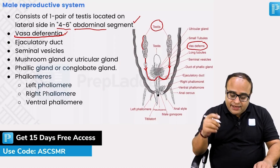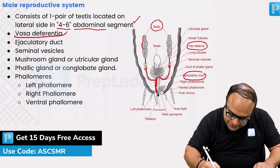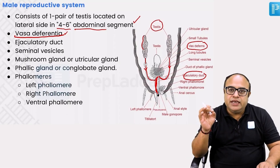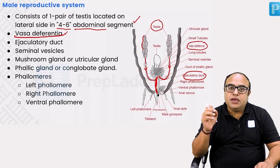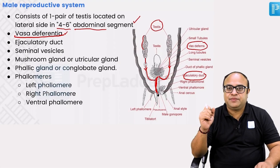At the point where these vas deferens meet, they produce an ejaculatory duct. Both the vas deferens join to form an ejaculatory duct. Try to compare it with the reproductive system of humans — in humans also, when the secretion of the seminal vesicle and the prostate gland get poured into the vas deferens, that duct is known as the ejaculatory duct.